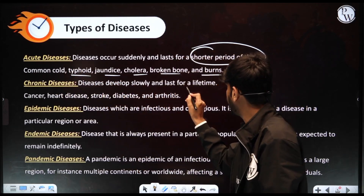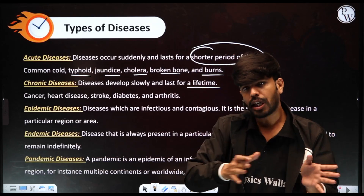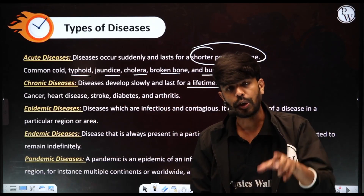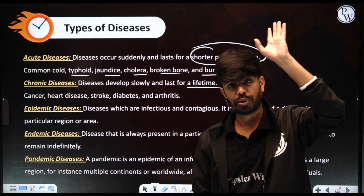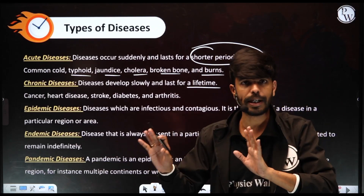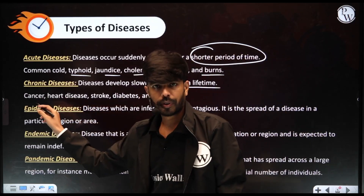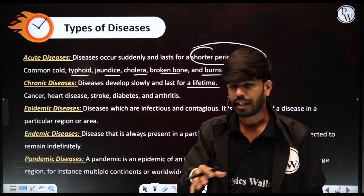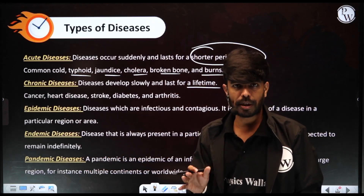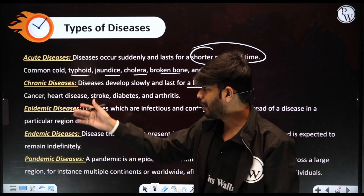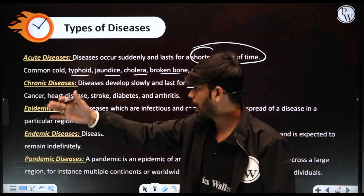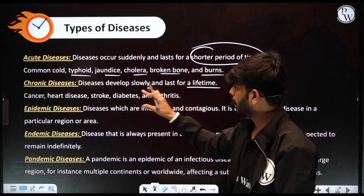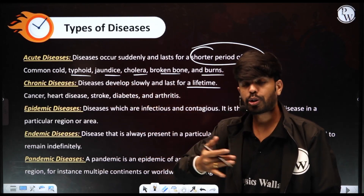Chronic diseases develop slowly and last for a lifetime. If you get a chronic disease at age 20 or 25, it lasts for your lifetime and may even lead to death. Examples include cancer — where there are benign tumors, which can be removed, and malignant tumors which are masses of cancerous cells that may lead to death. Other chronic diseases include heart diseases, stroke, diabetes, and arthritis.